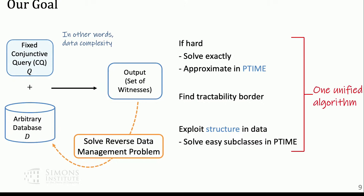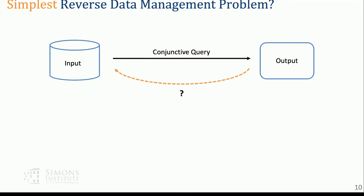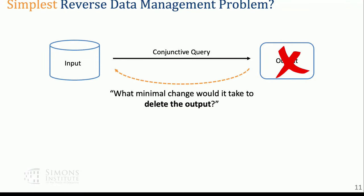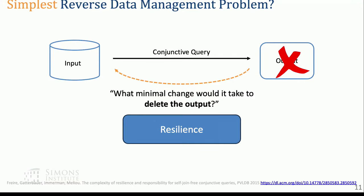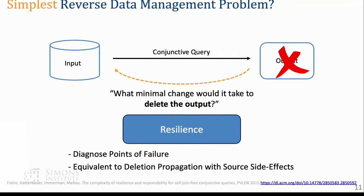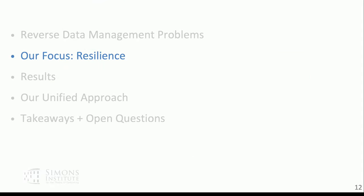What we propose is one unified algorithm to do all of the above. Before studying this whole reverse data management universe, it makes sense to look at the simplest possible such problem: what minimum change would it take to delete all of your output? This problem was proposed in 2015 by Sibali and co-authors as resilience. You can diagnose points of failure, and it turns out this is equivalent to deletion propagation with source side effects that has been studied for a long time.